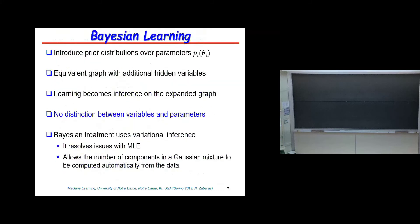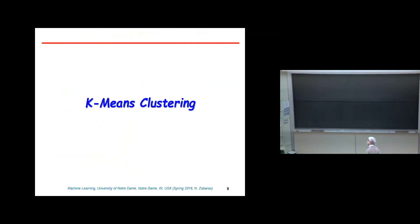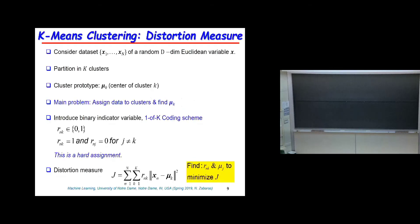In the context of what we'll do today, we'll introduce trivial examples to demonstrate the concept of latent variables, then use these algorithms later for more complex things. Here's the problem: I give you N data points, each a d-dimensional vector, and I want you to partition them into K clusters. We compute these clusters by defining the center of each cluster, which I call mu_k.